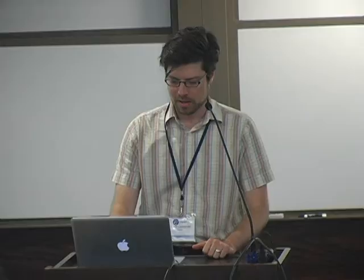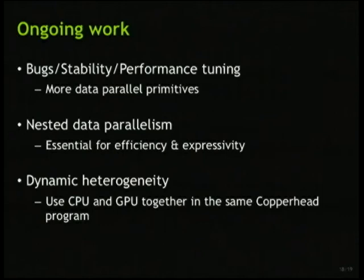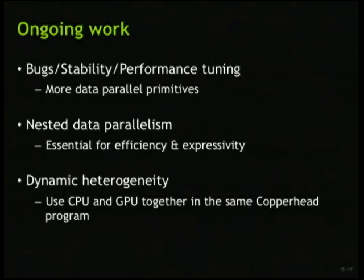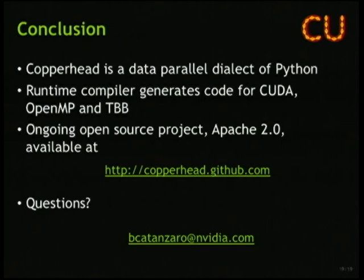So just to finish my talk — this is all ongoing work. I'm the only developer on it, and I'm having a lot of fun. There are a lot of things that need to be done: there are bugs, stability problems, performance issues that I know about. I need more parallel primitives, more expressivity. Nested data parallelism — where you can call map and then inside of that call another map — is really important for a lot of applications, so that's on my list. And dynamic heterogeneity to deal with being able to use many different kinds of processors in your system. In conclusion, Copperhead is a data parallel dialect of Python embedded in Python, with a runtime compiler. It's an ongoing open source project with the Apache license, on GitHub. If you have any questions, you can email me or ask some right now.